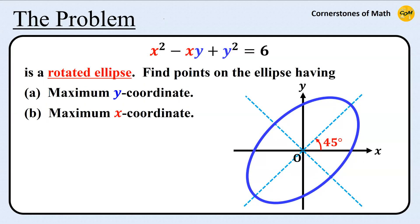Hello, and welcome to yet another video of Cornerstones of Math. Today, we will solve the following problem: x squared minus xy plus y squared equals 6 is a rotated ellipse with angle of rotation 45 degrees. In my last video, I explained how we can find this angle of rotation and transform the equation into standard form, that is, without the xy term. You can check the link in the description. In this video, we will find some points on the ellipse having maximum y-coordinate and maximum x-coordinate.